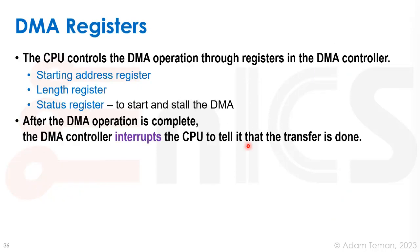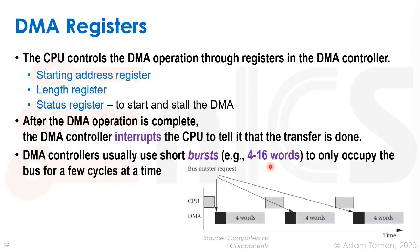The DMA has a set of registers: a starting address register, a length register, and a status register. Using the status register, the CPU can configure and start the DMA. The DMA gets permission to take control of the bus, receives instructions to move chunks of memory from one place to another, and when it completes its operation it interrupts the CPU to signal that the transfer is done. In the meantime the CPU can do whatever it wants. The DMA usually works in short bursts of four to sixteen words, occupying the bus for only a small amount of time.